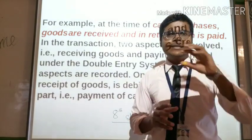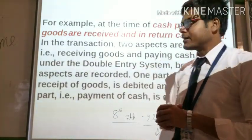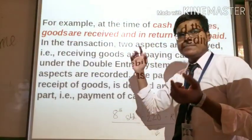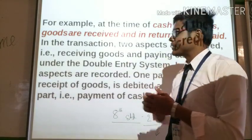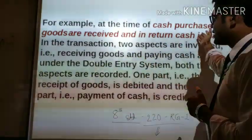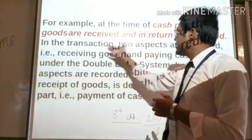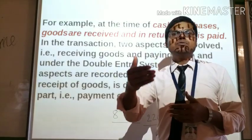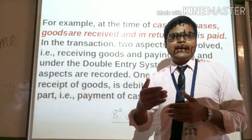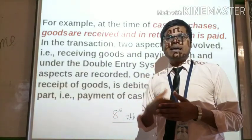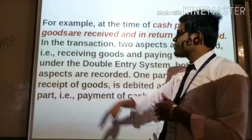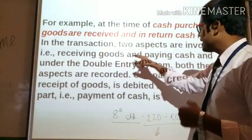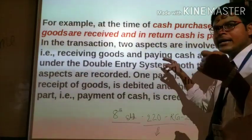So this is our double entry system of recording. For example, at the time of cash purchase, goods are received and in return cash is paid. In this transaction, two aspects are involved: that is receiving goods and paying cash.